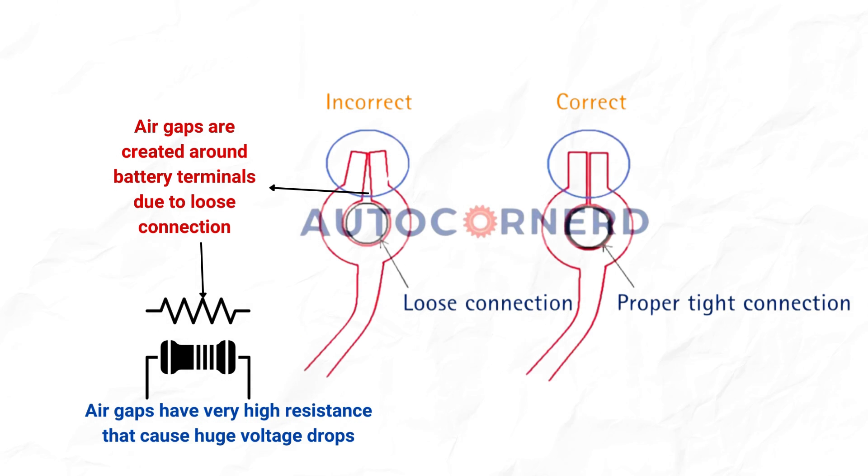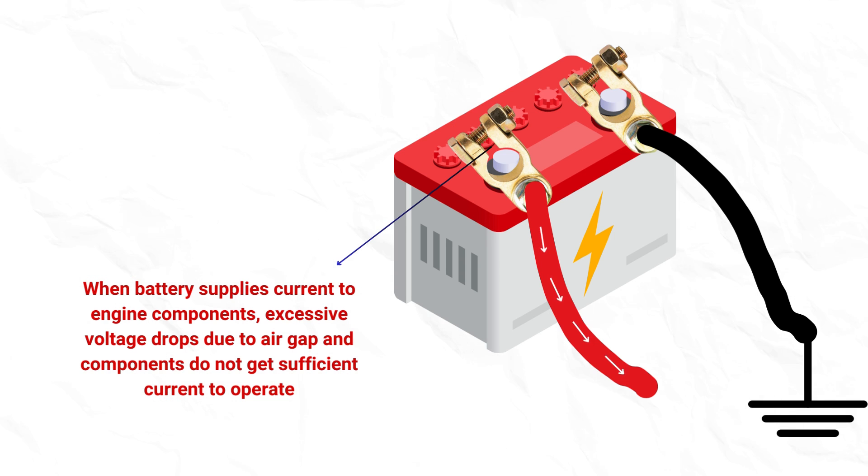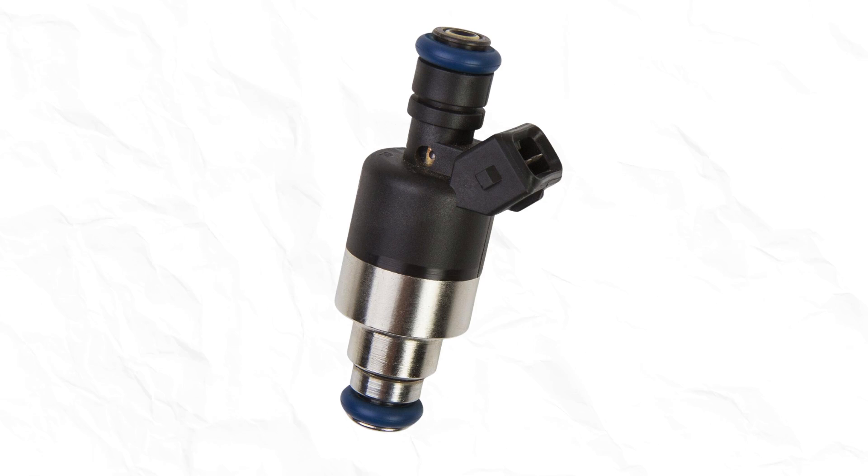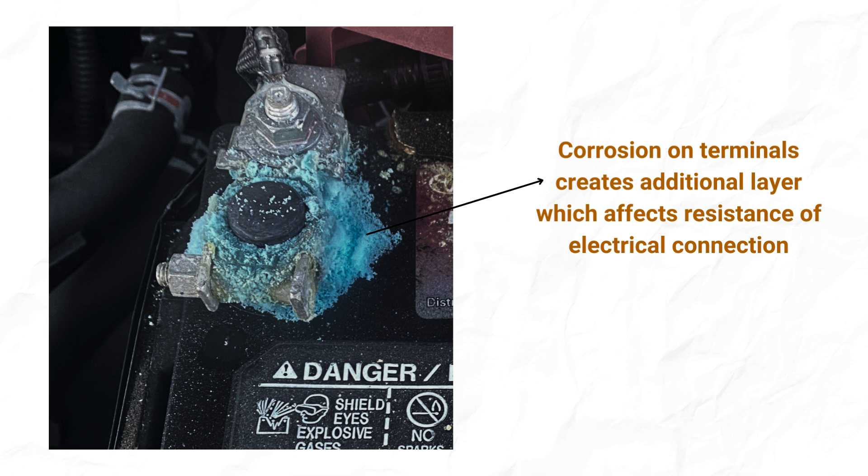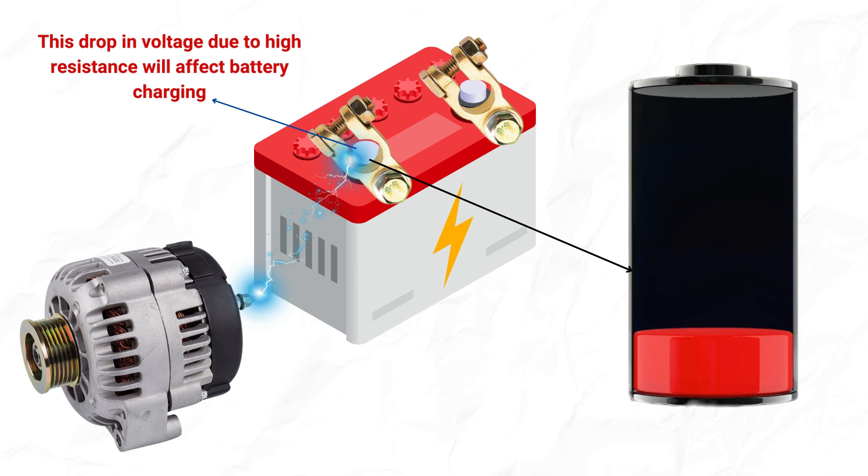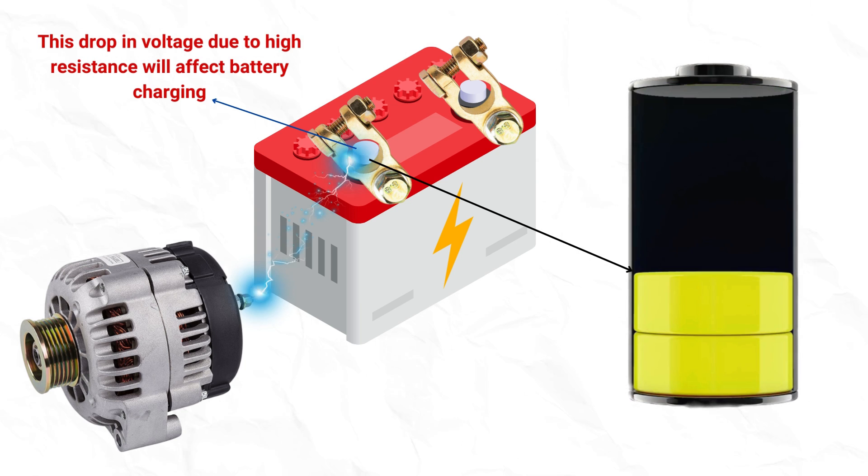Loose battery connections create an air gap around battery terminals. Air gaps have very high resistance that results in excessive voltage drop which will prevent sufficient current flow to different engine components like sensors, fuel injectors, and valves. Moreover, corroded battery terminals have an additional layer affecting the resistance of the electrical connection in the same way. This drop in voltage due to high resistance can affect the smooth charging of the battery.